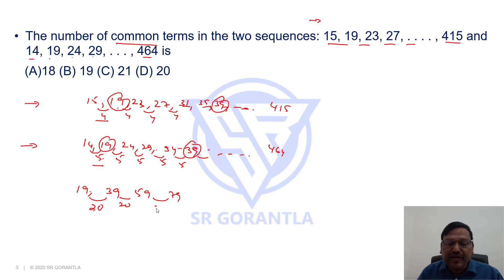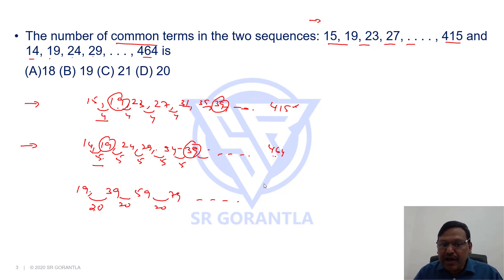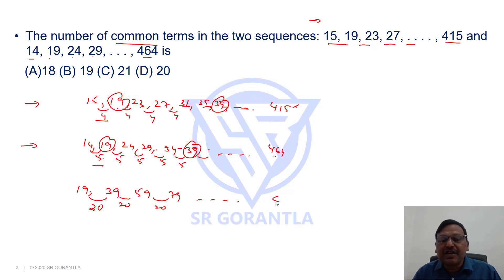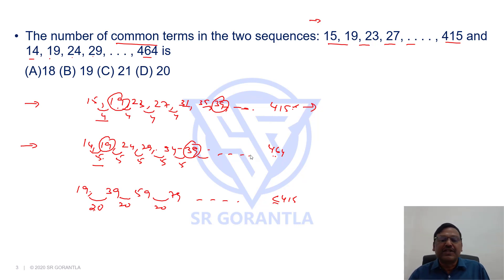We have a common difference of 20. Since the first series ends with 415 and the second ends with 464, the common terms must end with a number less than or equal to 415, because after 415 there are no more terms in the first series. So there cannot be any common term beyond that.